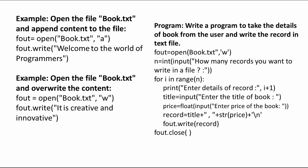In the first example, we have opened a text file book.txt with mode 'a'. 'a' stands for append. In append mode, whatever we write, the new data will be added at the end of the previously written data. The previous data will remain — it will not be erased or overwritten by the new data. That is why we have used append mode, then written f_out.write('Welcome to the world of programmers'), so this line will be added to the previous data.